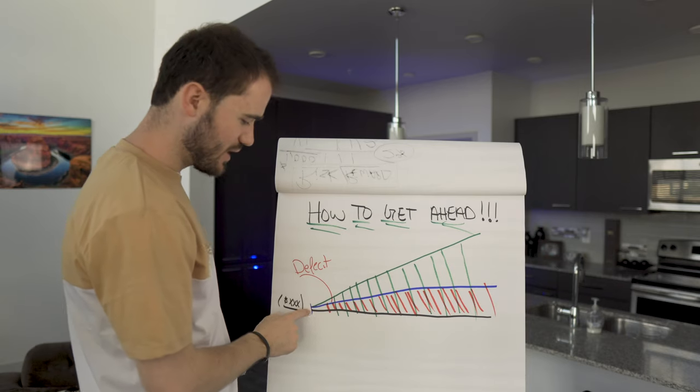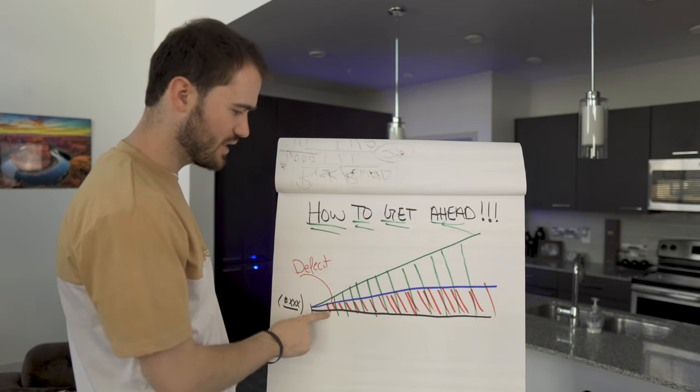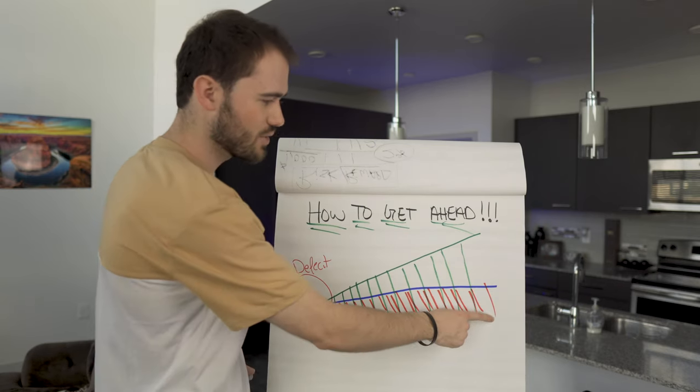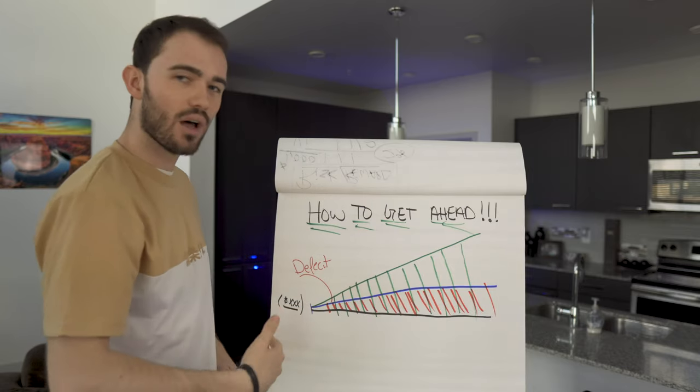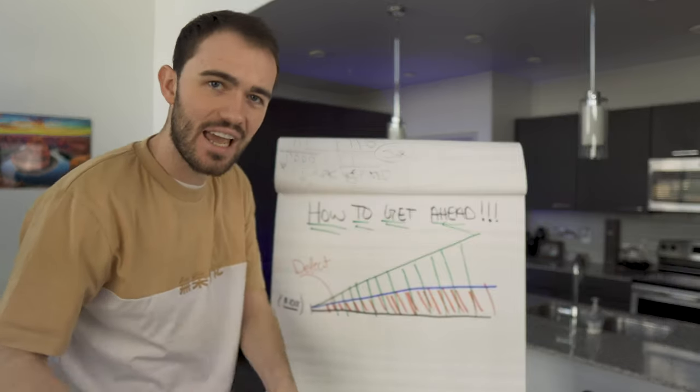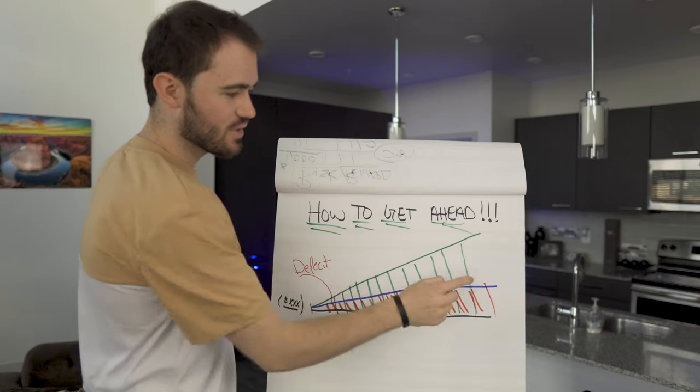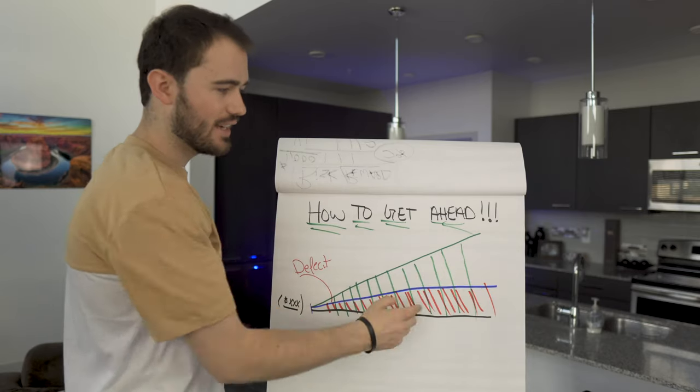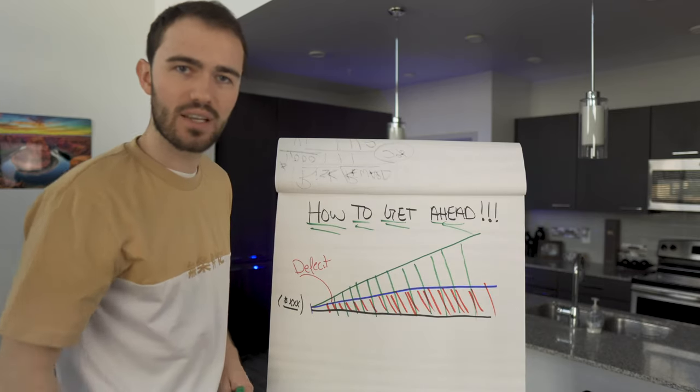Because what this means is that if this is a hundred thousand dollars, this black line is a hundred thousand dollars, that will get you a hundred thousand dollars worth of stuff today. But in 10 years, that'll only get you ninety thousand dollar equivalent.